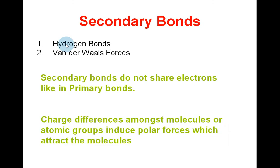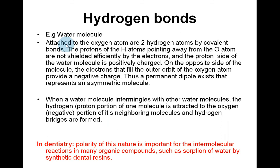Secondary bonds — for example, hydrogen bonds and van der Waals forces — do not share electrons like primary bonds. The charge differences amongst molecules or atomic groups induce polar forces which attract the molecules. For hydrogen bonds, take the water molecule: attached to the oxygen atom are two hydrogen atoms by covalent bonds. The protons of the H atoms, pointing away from the oxygen, are not shielded efficiently by electrons, so the proton side of the water molecule is positively charged. On the opposite side, the electrons filling the outer orbit of oxygen provide a negative charge, and thus a permanent dipole exists, representing an asymmetrical molecule.